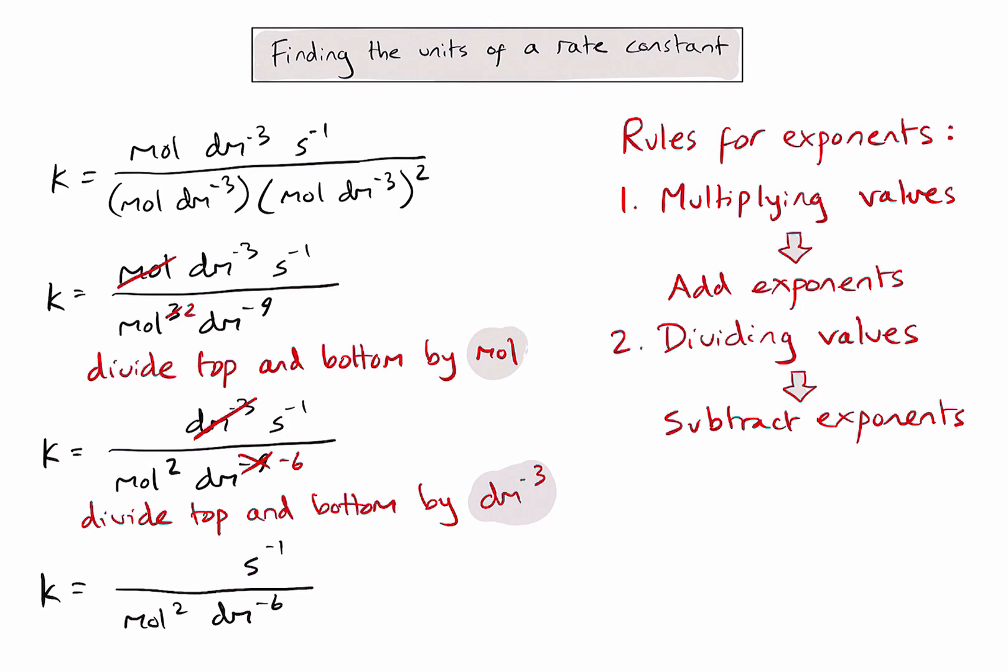The final step of the simplification is to put all of these units on one line. So for anything on the bottom half of my equation, I can move it up to the top half by simply changing the sign on the exponent.